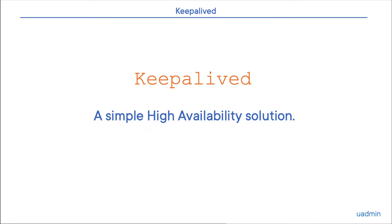Hi, this is another video in the Random Linux Stuff playlist. This one's on creating a simple, high-availability environment with Keepalived. We'll discuss how it works, then we install it on two Raspberry Pis and set up a simple configuration.